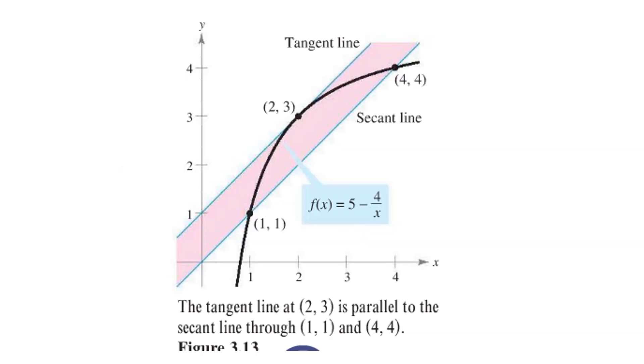And here we can see when we graph it that in fact the slope of the tangent line when x is equal to 2 is the same and it's parallel to the secant line.